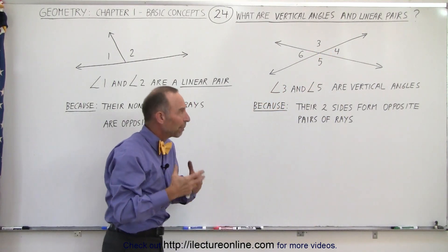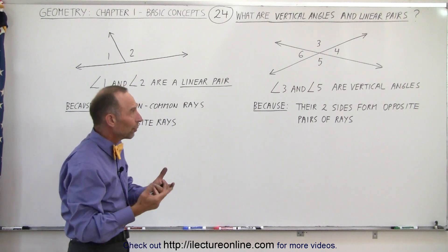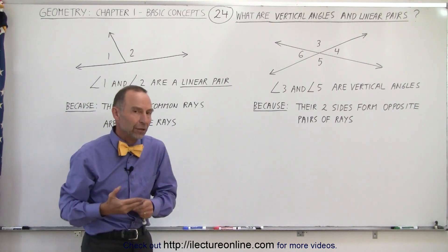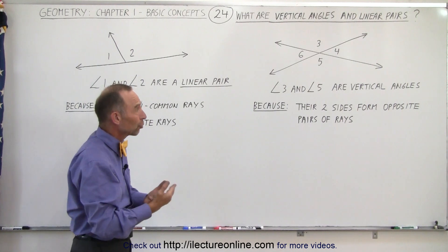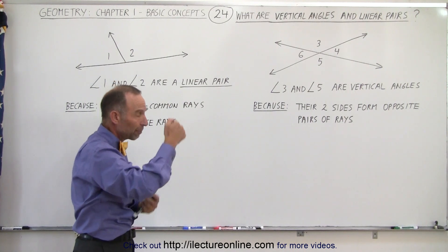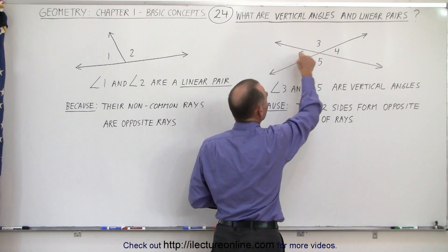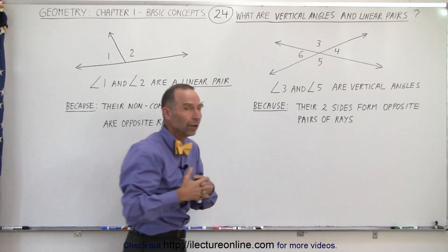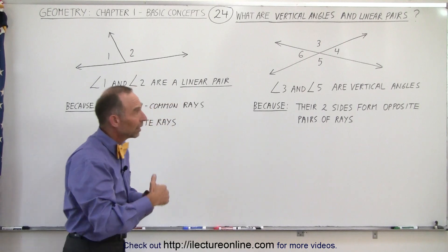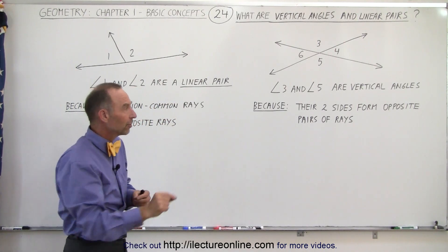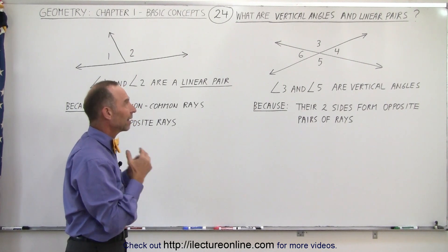So each angle has a pair of rays which form opposite rays to the other angle, and therefore they're called vertical angles. You will also sometimes hear the term opposite angles because they appear opposite to one another. 3 and 5 are opposite to one another, 4 and 6 are opposite to one another, but the term used here is vertical angles because their two sides form opposite pairs of rays, and that's the definition.